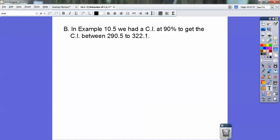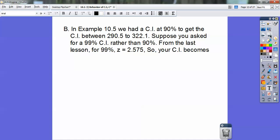In example 10.5, we had a confidence interval. This was from a prior example, I think in yesterday's notes. Confidence interval at 90% to get the confidence interval between 290.5 and 322.1. Suppose you asked for a 99% confidence interval rather than a 90% confidence interval. The only thing that's going to do is change your Z score.